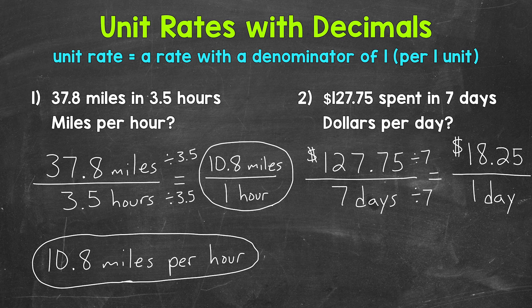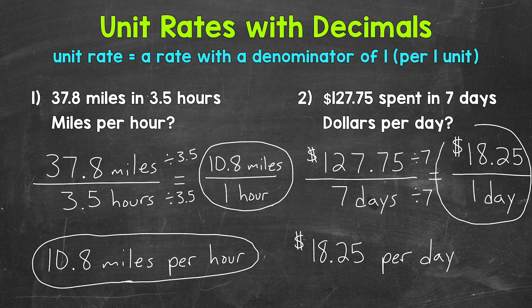Our unit rate is $18.25 per one day, or $18.25 per day. So that shows us how much money was spent per day. We can also write this as $18.25 per day. So this is our unit rate in fractional form. And then we can also write it like this.